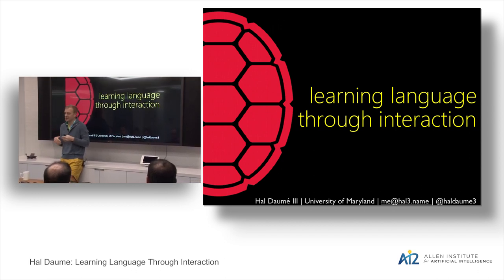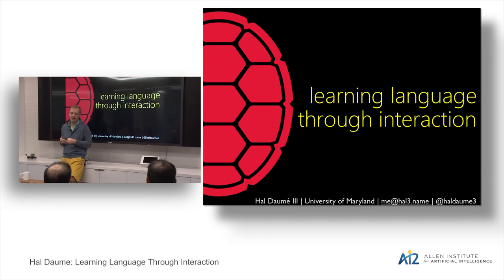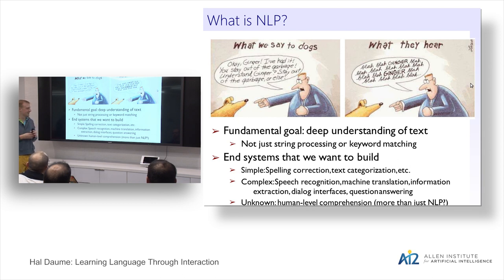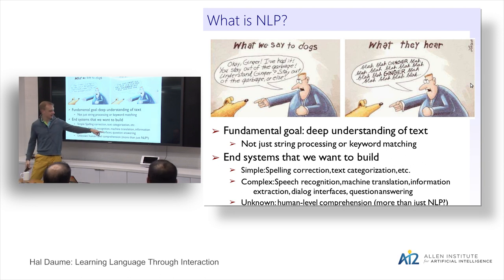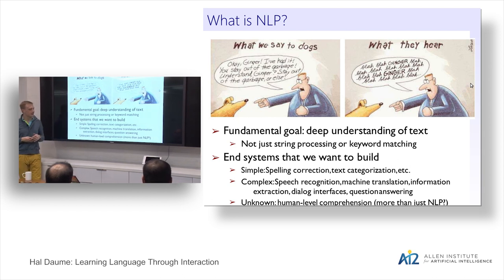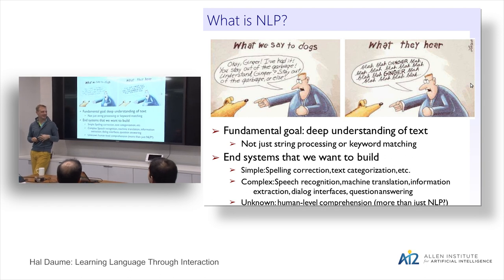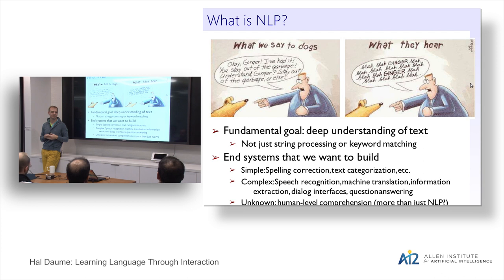The direction we've been pushing is: get a little bit of data, build an initial system for solving a task, deploy it in a real-world setting where it's interacting with people, and then use those interactions to drive performance higher and learn from them. I'm going to focus on machine translation and question answering for most of the talk. I believe in learning through interaction, so if you have questions, please ask.